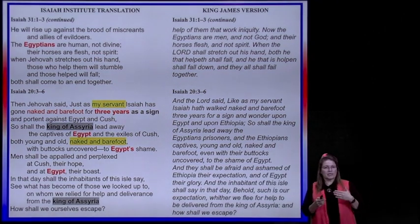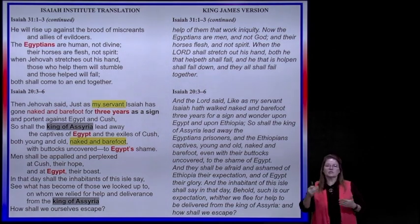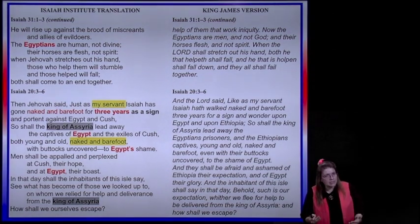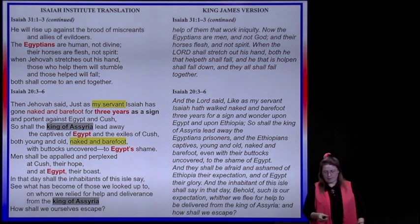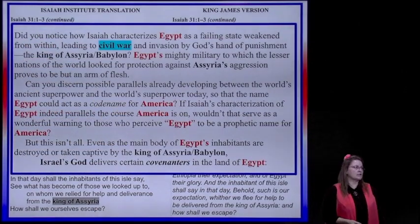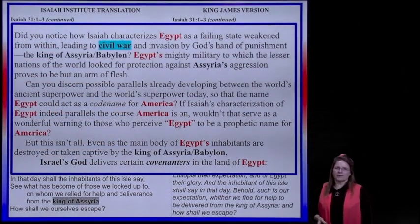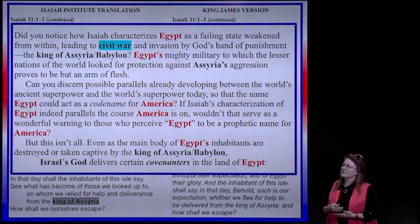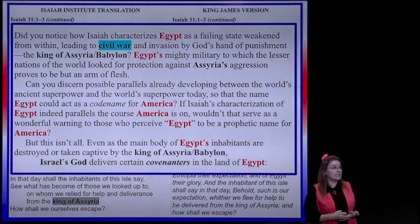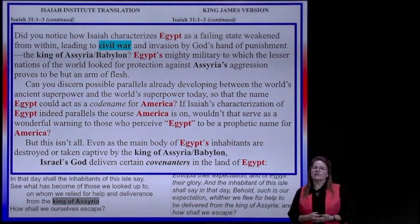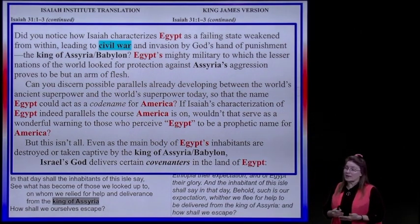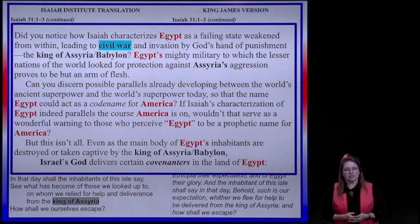From verse 3, we get the idea that there will be a servant that will come to Egypt and prophesy for three years to warn them to turn back to the Lord and repent. Do you notice how Isaiah characterizes Egypt as a failing state, weakened from within, leading to civil war and an invasion by God's hand of punishment from the king of Assyria or Babylon?